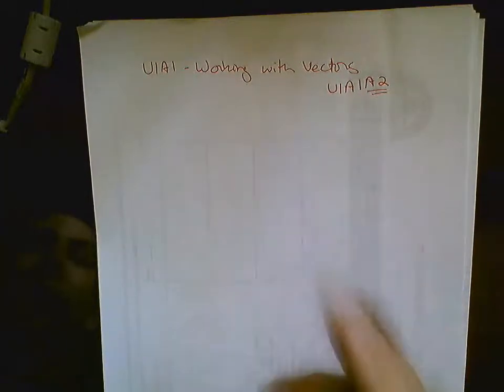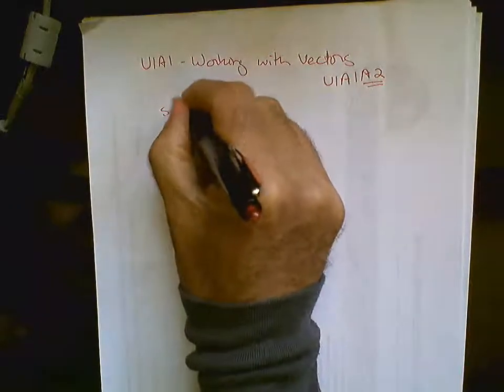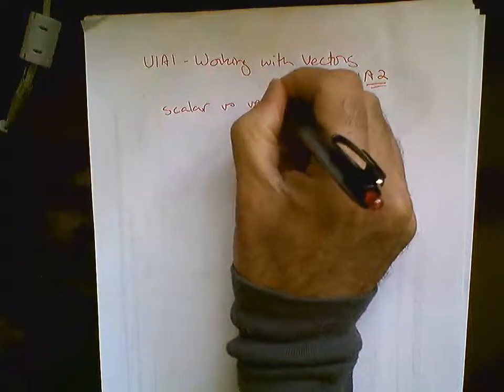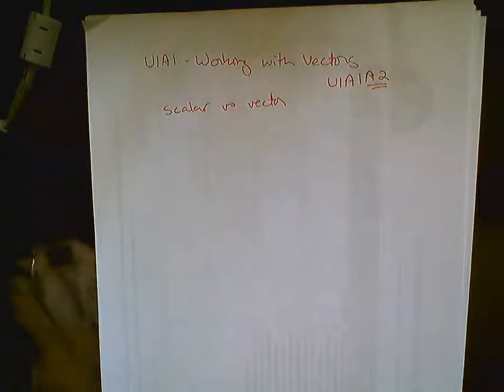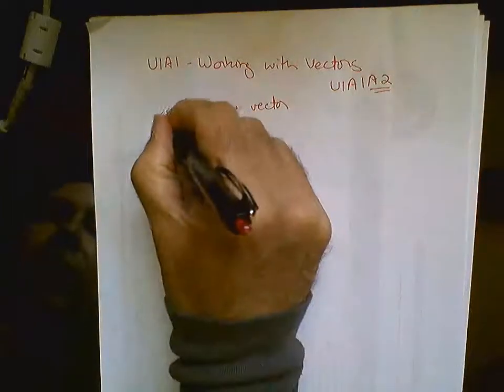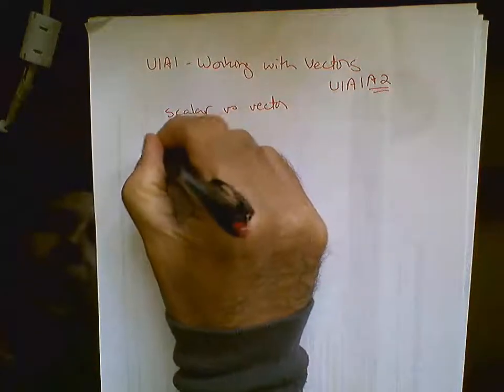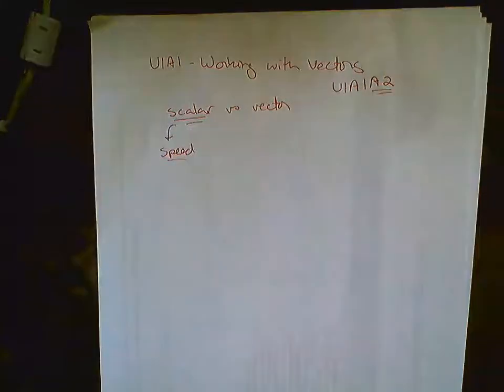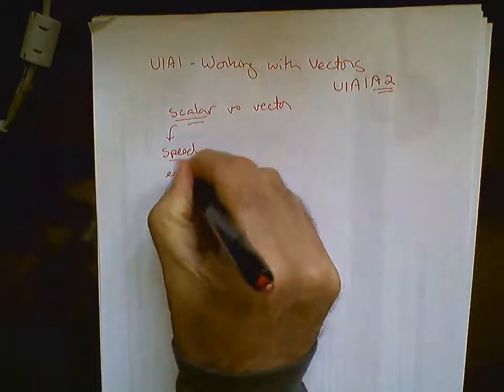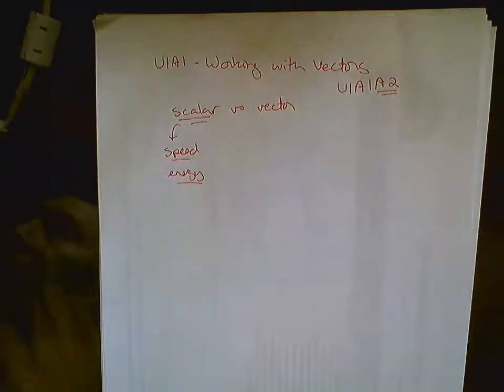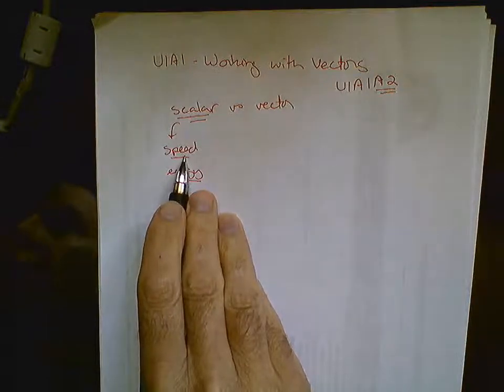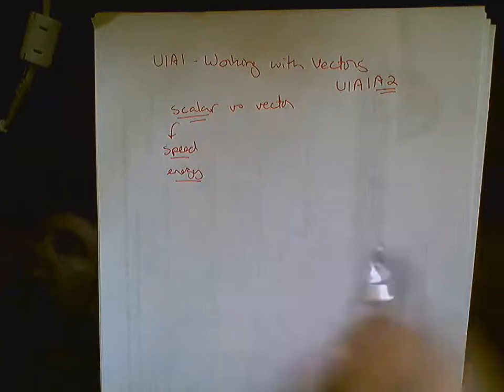First thing is going to be scalar versus vector. Often when we're doing physics, we don't care about direction. When we don't care about direction, we use the term scalar. So for example, speed is a scalar. Energy is a scalar. We never ask how fast the world's fastest person is and what direction they're going. We just care about their speed.